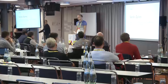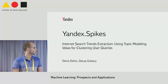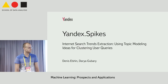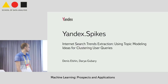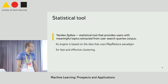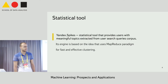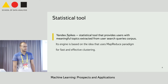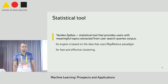Hello, my name is Dennis, and I'd like to tell you about the tool we're developing at the statistical department in Yandex. It's called Yandex Spikes, and it's aimed at extracting meaningful topics from a set of user web search queries. In essence, it's yet another text-clustering algorithm implemented in the MapReduce paradigm.